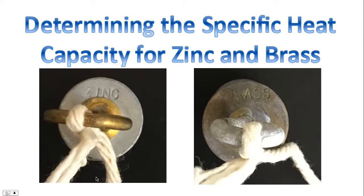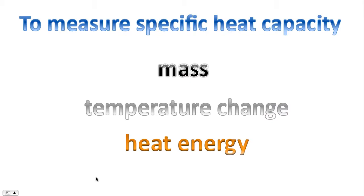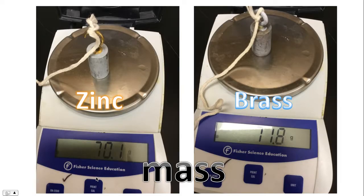We'll need to use that formula for these two metals. We'll need to know the mass, temperature change, and heat energy. Here's the mass: the zinc, 70.1 grams, and the brass, 71.8 grams.